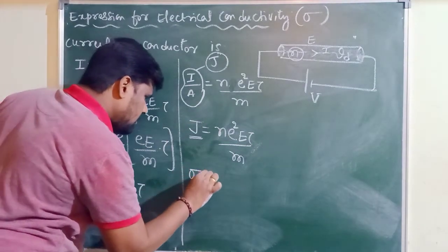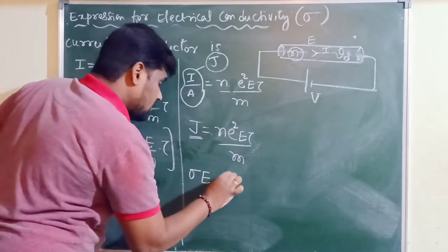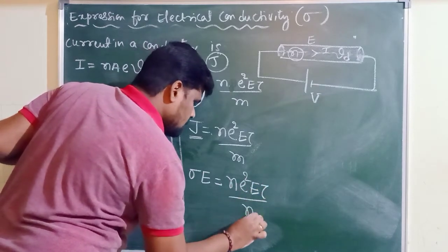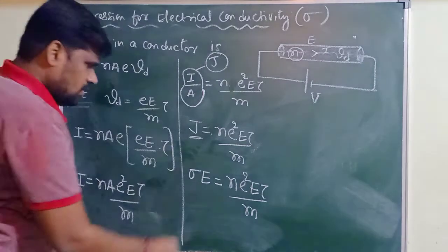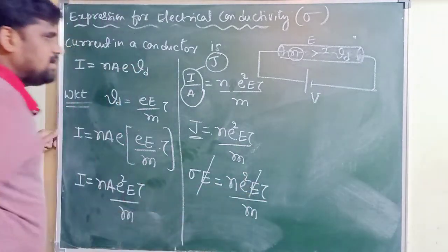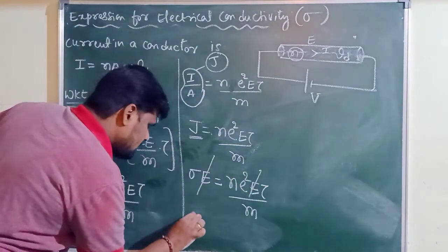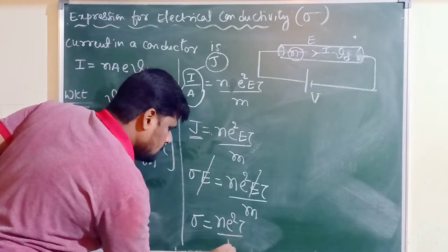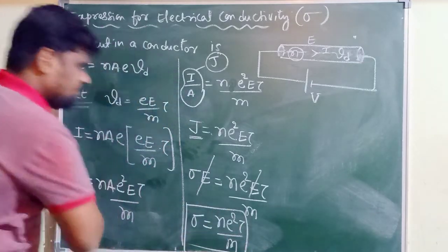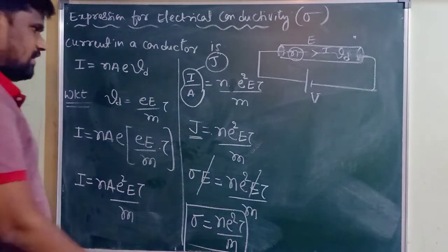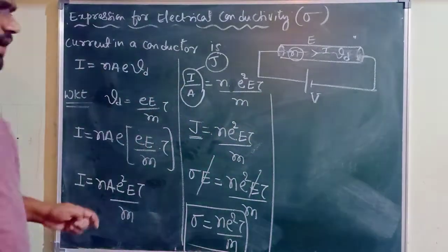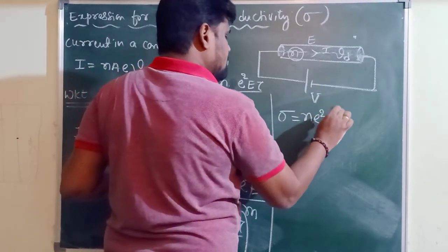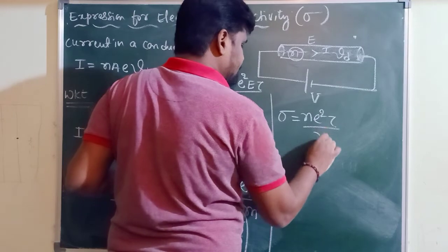Since J equals sigma E and J equals N e² E tau by m, we can write sigma into E equals N e² E tau by m. The E on both sides cancels. Finally we are left with: sigma equals N e² tau by m, which is the expression for electrical conductivity.